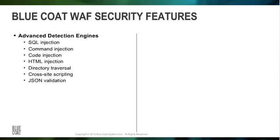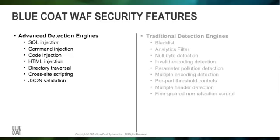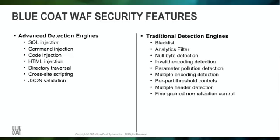Because of the many security challenges to traditional reverse proxy solutions, Bluecoat has developed advanced detection engines that do not rely on specific attack signatures and regular expression matching. The new advanced engines are complemented by several traditional signature-based engines to provide comprehensive protection against both known and unknown exploits.